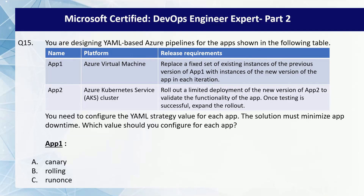For App1, you should use the rolling deployment strategy. A rolling deployment strategy replaces instances of the previous version of an application with instances of the new version on a fixed set of virtual machines in each iteration. Rolling deployment strategy is only supported for virtual machine resources.